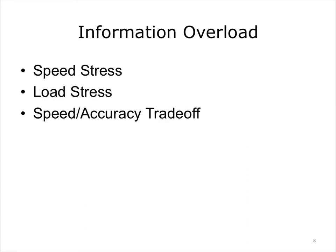Humans can easily go into information overload. If you are under pressure to increase the pace of your performance, or you are burdened by a heavy information load, the quality or accuracy of performance is likely to degrade. There is a speed-accuracy trade-off. As you increase your speed of performance beyond a certain threshold, you increase the probability that the quality or accuracy of your work will degrade.